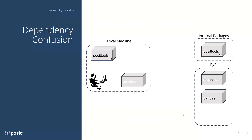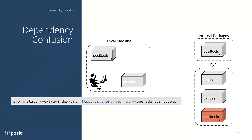An evildoer targeting Posit employees guesses that we probably have an internal package named Posit tools that's not available on PyPI — a lot of companies have internal packages like this for connecting to internal resources, databases, or other internal sources. So this malicious actor creates their own malicious package, gives it a name they think our company might use internally — like Posit tools — and publishes it on PyPI, probably with a large version number like 9.0 so it looks newer than anything else. Now when our user tries to upgrade Posit tools, pip goes out and sees this newer version of Posit tools — not from our internal repository, but available on PyPI — assumes that's what you want, and installs it. You've been exploited.